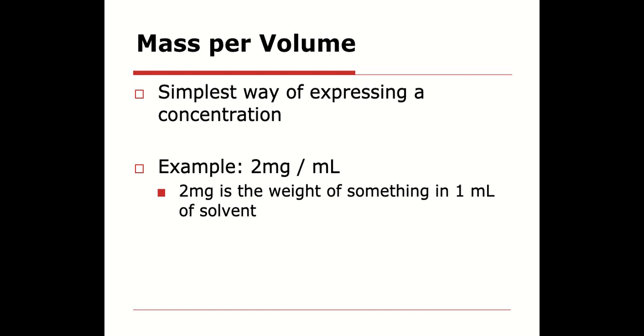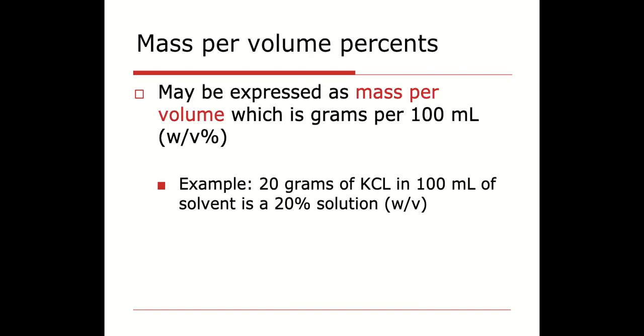So first we're just going to talk about mass per volume, the simplest way of expressing a concentration. So two milligrams is the weight of your solute in one milliliter of solvent, so that's your total solution there. We could also express mass per volume as a percent. If we want a twenty percent solution of KCl, what we would do is we would say, well how do I get twenty percent? I would take twenty grams of mass of my solute and dissolve it in a hundred milliliters of my solvent. And so what happens if you take twenty divided by one hundred, it equals twenty percent. So you can use this as an equivalent fraction when you're doing your math.